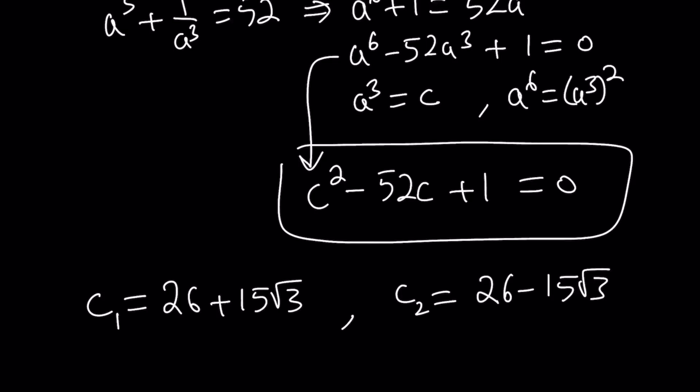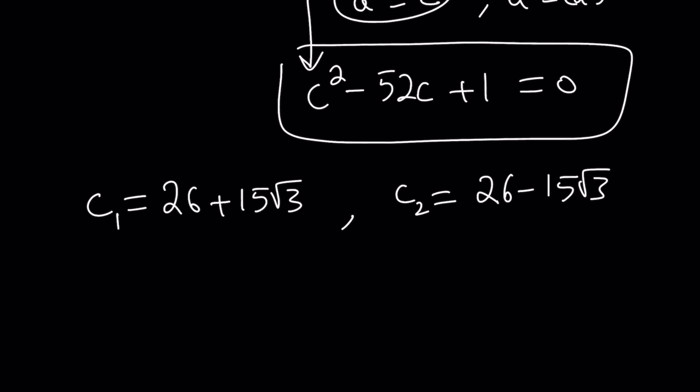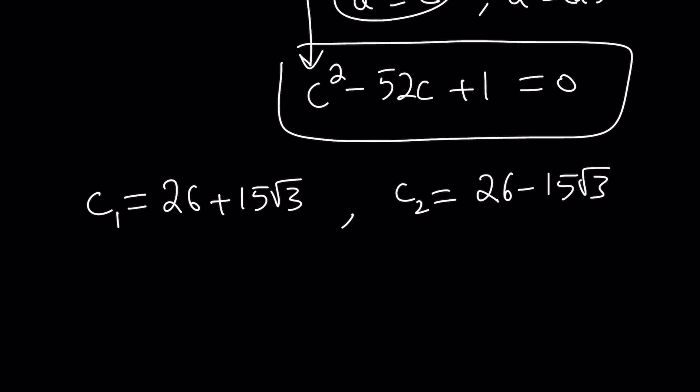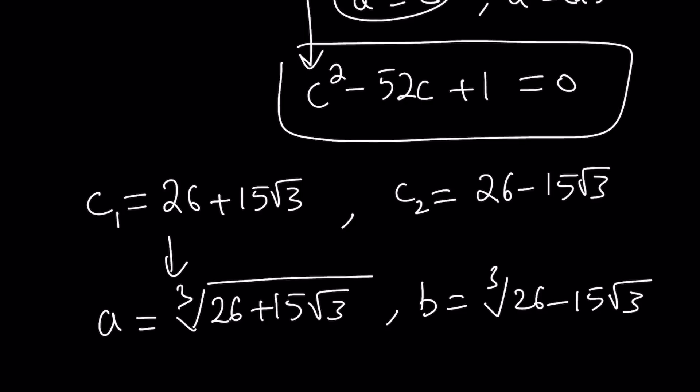So c is what? C is a cubed. So to find the value of a, I'm going to have to set this equal to a cubed, or I'm going to have to cube root this number. And in that case, b is going to be the cube root of the other number. You can switch them around, it doesn't matter. Because at the end, a and b are being added to get z. So it doesn't matter which one is which.